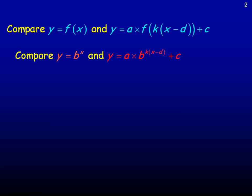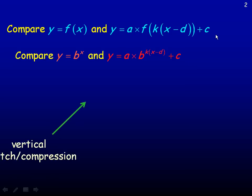Now on page 2, we talk about how in general all the different transformations affect the original graph. If you remember from previous study, y equals f of x is our parent function. Multiplying by a, and the parameters k, d, and c all have meanings. The parameter a is the vertical stretch or compression, k is the horizontal stretch or compression, d moves the graph horizontally left or right depending on the sign, and c on the end is the constant that moves it up or down — the vertical translation.